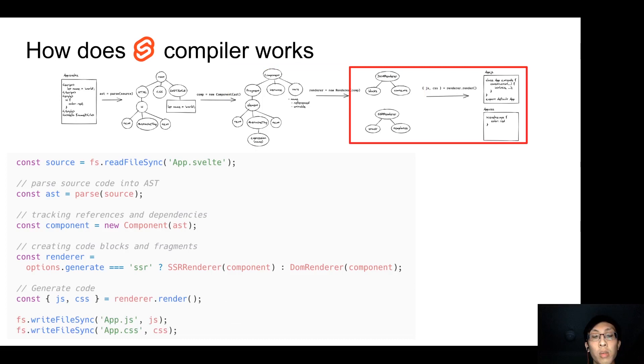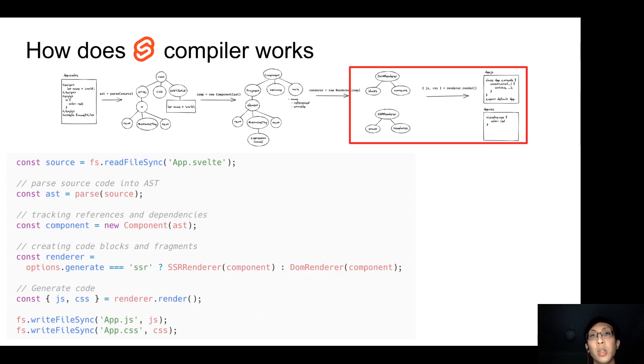And then the next step is create a render instance. Depending on the compile options with the renderer, Svelte then uses it to generate code which is both JavaScript and CSS and then writes both of them into the file system. So let's start from the beginning, the parsing.